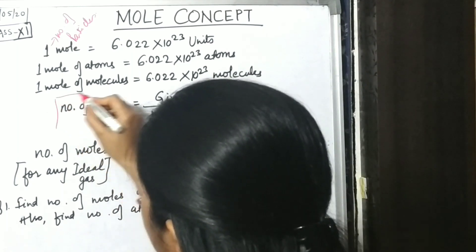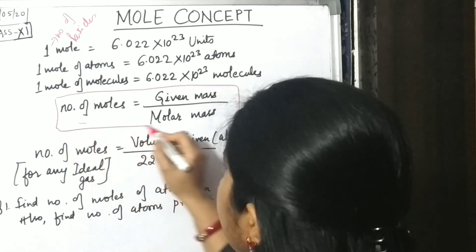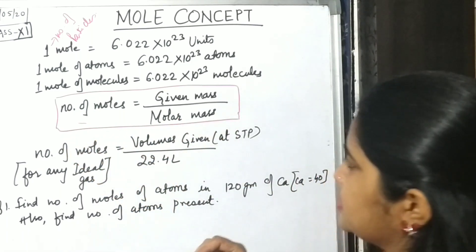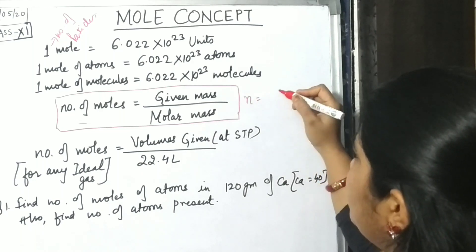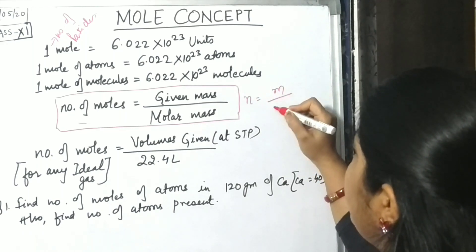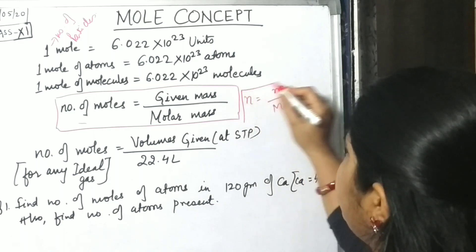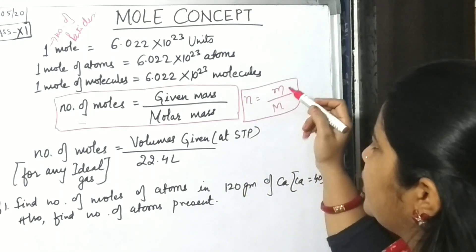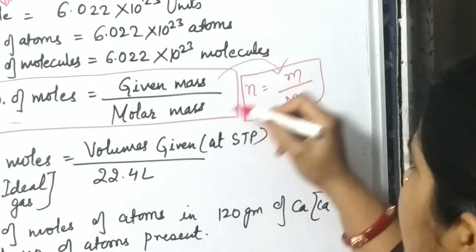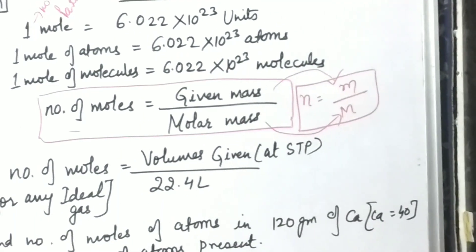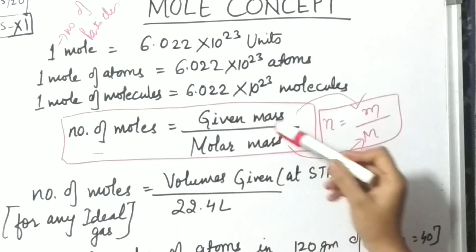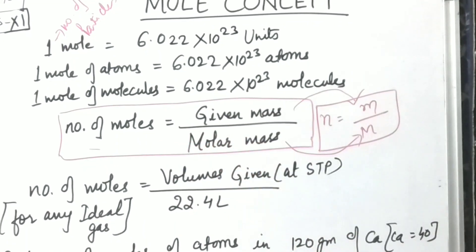Number of moles equals given mass by molar mass. In short we can write it as n = m/M, where n is number of moles, small m indicates the given mass, and molar mass is capital M. Whenever you do numericals, two of these three might be given values and one you have to find out.